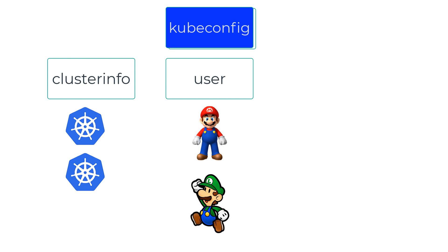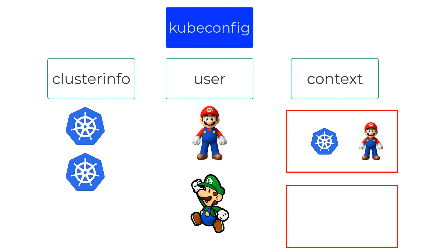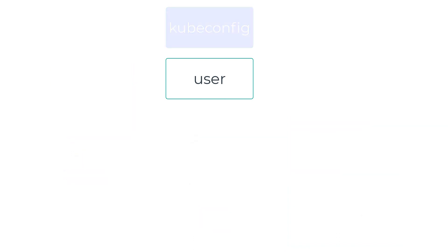We then have the context, which is essentially a combination of the cluster information and the user information. For example, we could have an admin_user1_cluster1 context which combines the administrator user credentials for cluster 1. Similarly, we can have the same admin user for cluster 2, or a different combination such as admin_user2 for cluster 1.